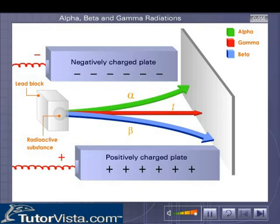The rays that get deflected towards the negatively charged plate are called alpha rays, while those that deflect towards the positively charged plate are called beta rays. The rays that travel straight without deflection are called gamma rays.